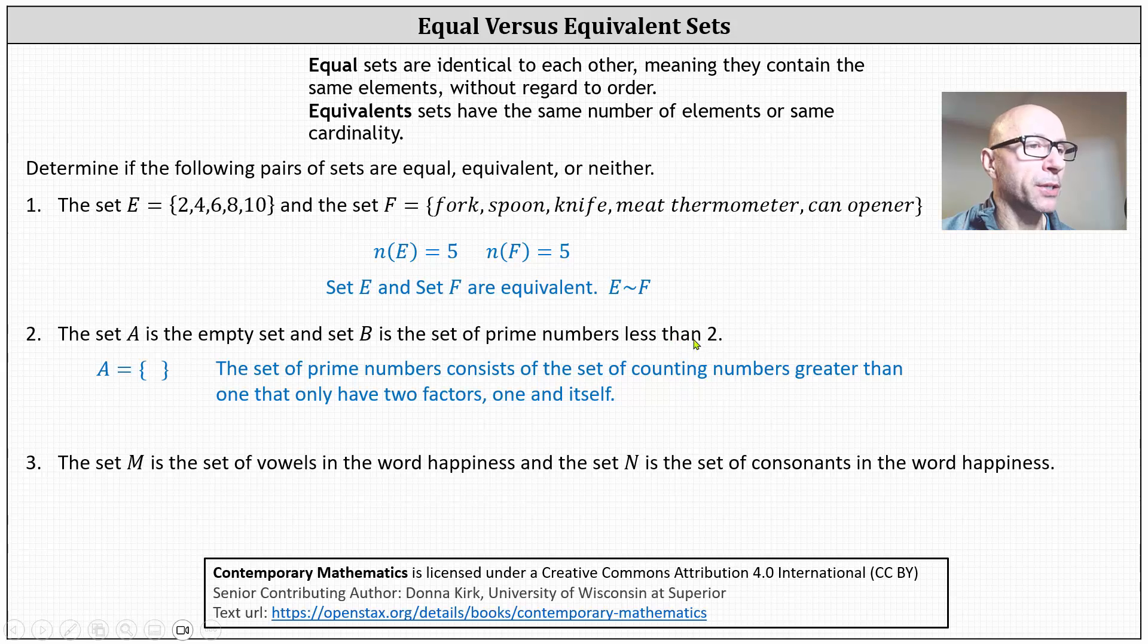And again, set B is a set of prime numbers less than two. So the set of prime numbers would be the set containing the elements 2, 3, 5, 7, 11, and so on. But again, our set B contains prime numbers less than two. We can see there are no prime numbers less than two. And therefore, set B is also the empty set. Because both sets contain no elements, we can say that set A equals set B.